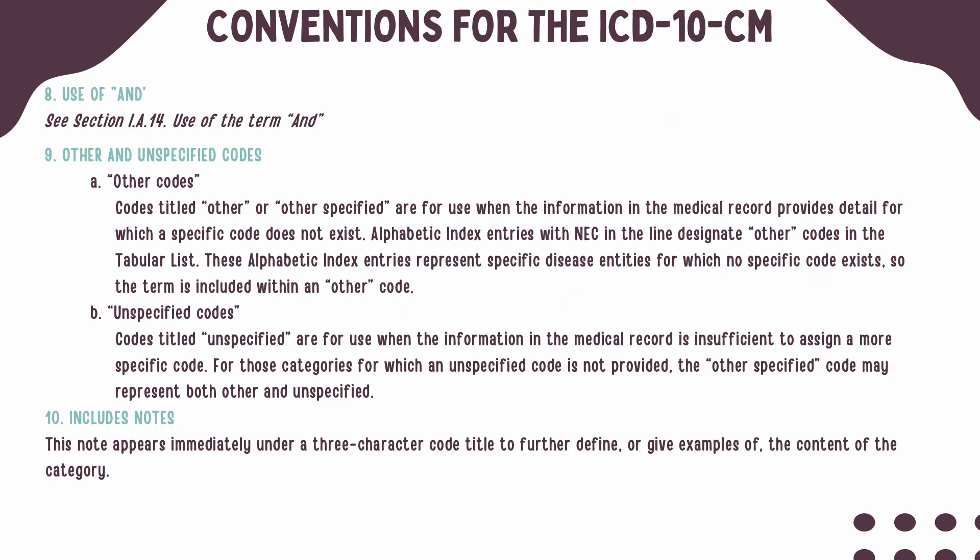When you have a code that is titled Other or Unspecified, it will be used when the documentation provides more detail than what is in your code set. These codes are equivalent to a code with the abbreviation NEC. Unspecified codes should be used when the documentation is not specific enough to assign a more detailed code, and these codes will be equivalent to the abbreviation NOS.